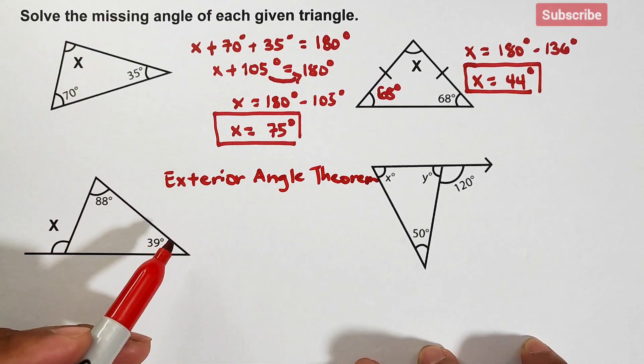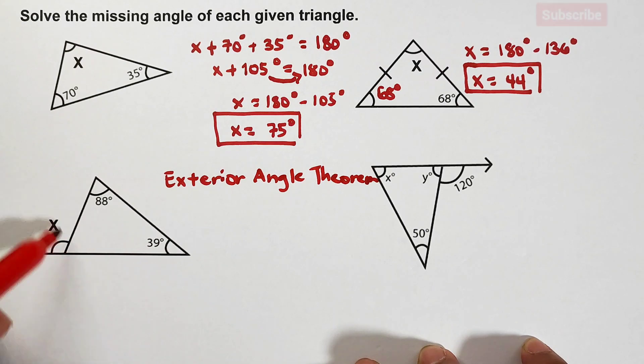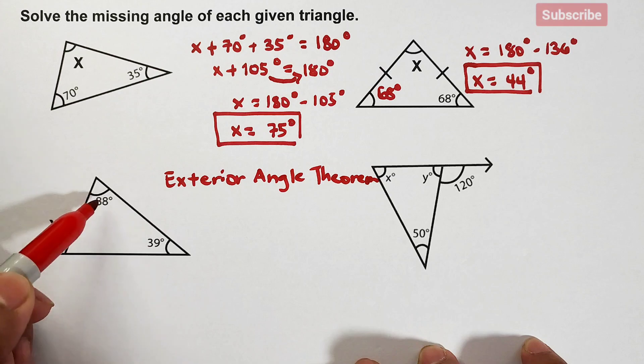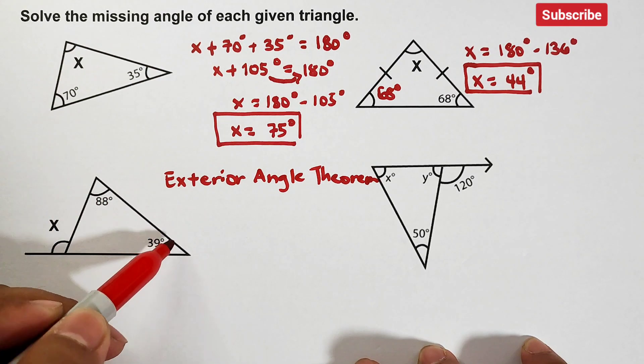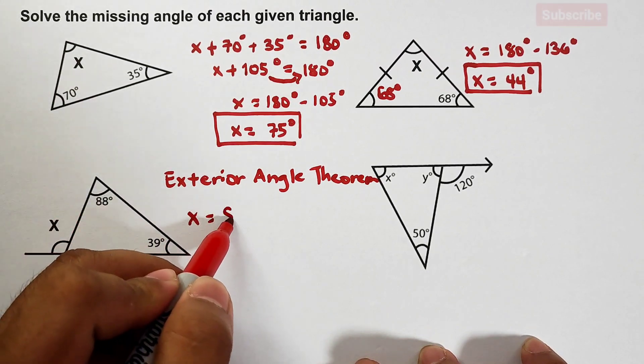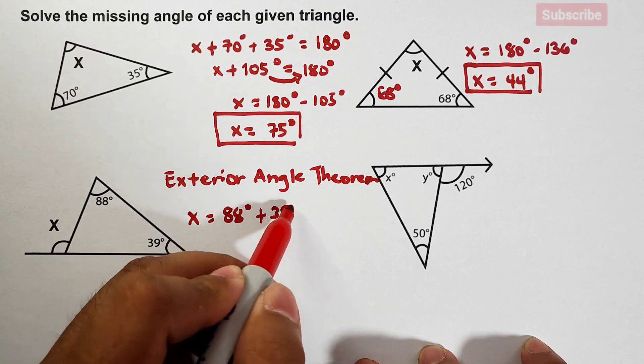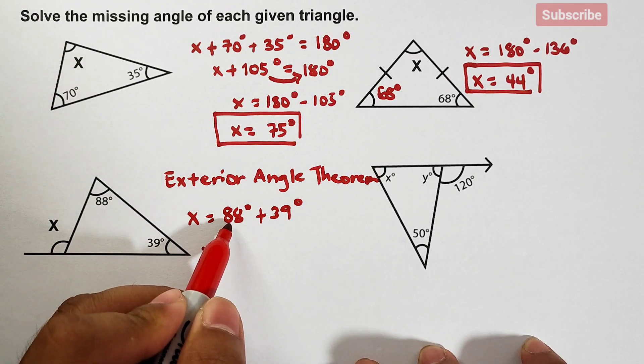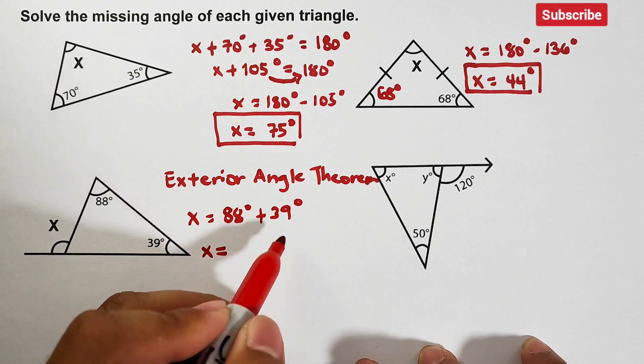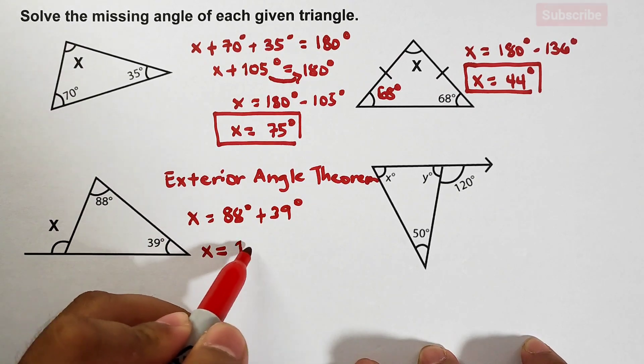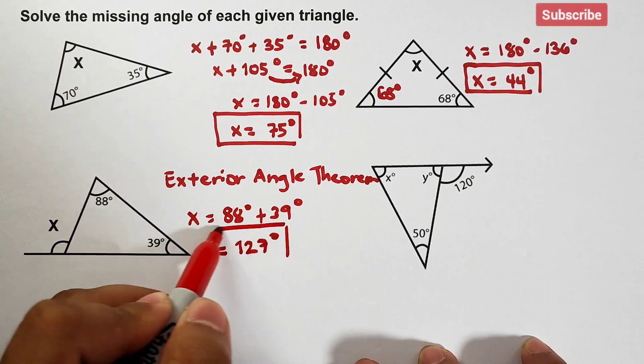Exterior angle theorem states that to find the missing or the exterior angle of any triangle, simply add those interior angles that are not adjacent to our exterior angle. As you can see we have this angle and this angle. To find this measurement, all we need to do is to add these two. So we have x is equal to 88 degrees plus 39 degrees. So your x is equal to the sum of these two, which is, 80 plus 30 is 110, then 8 plus 9 is 17, meaning this is 127 degrees. This is the value of x.